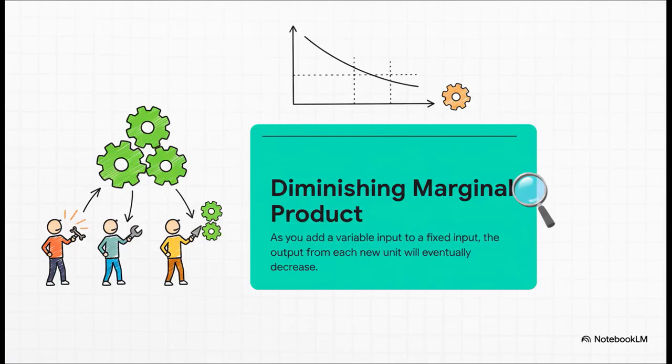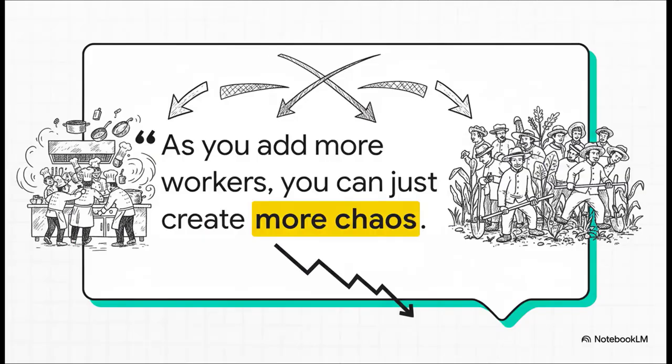The fancy name for what we saw with our taxi problem is the law of diminishing marginal product. Most people just call it diminishing returns. And listen, the crucial point here is not that adding more is always bad. Not at all. It's that eventually you're going to hit a point where each new person you add contributes a little bit less than the person who came before them.